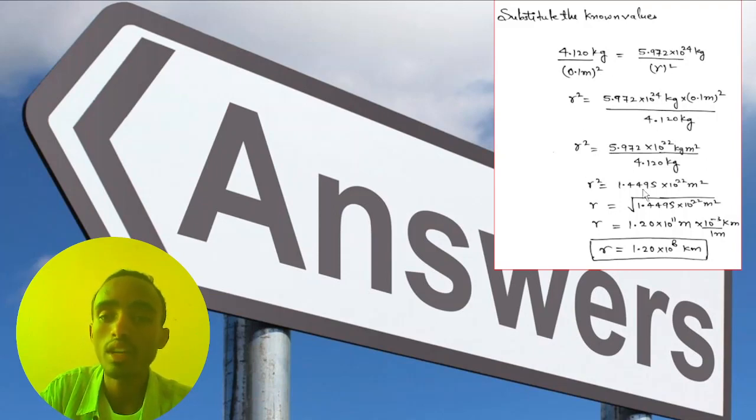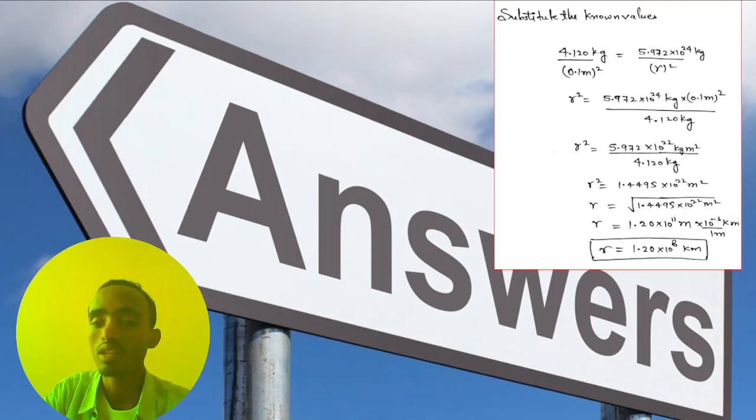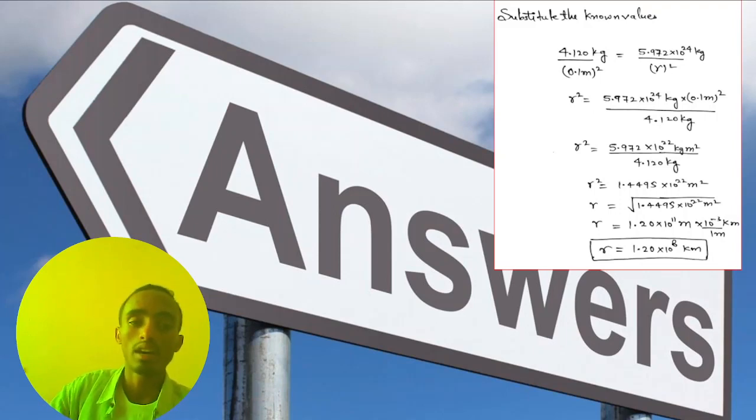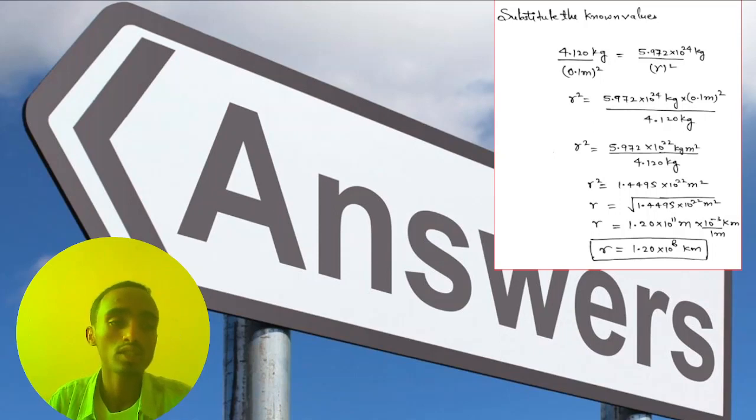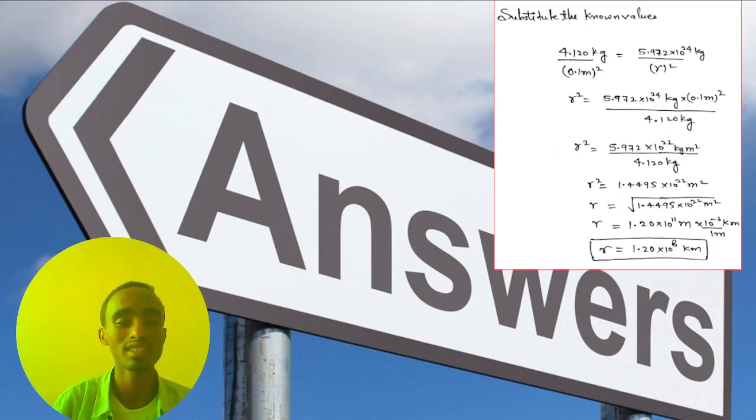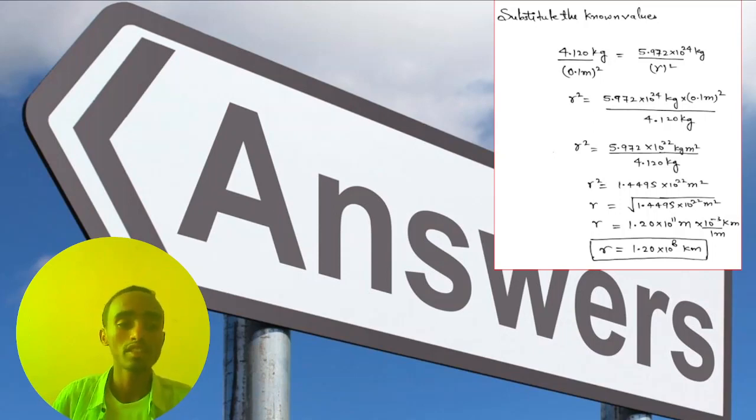After simplifying, r squared equals the mass of the Earth times the radius of the iron sphere over the mass of the iron sphere. Substituting the values, we get r equals 1.20 times 10 to the power of 8 kilometers. That concludes this problem. See you next time!